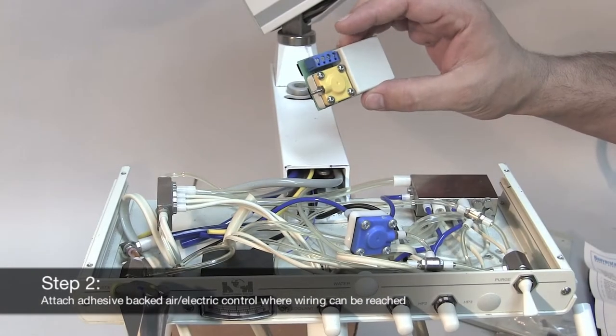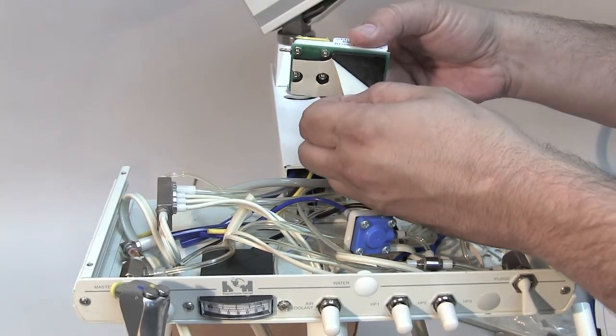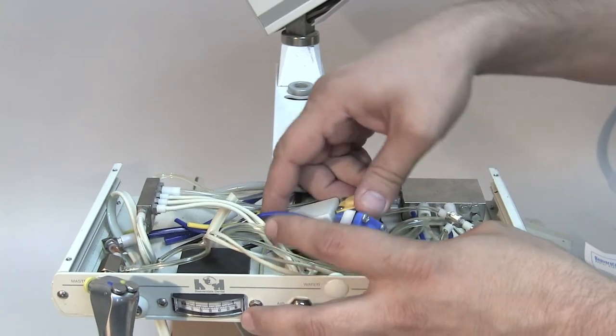Next, grab the air electric control and adhere it to the unit. Put it someplace where the terminals for the wiring and barb for the air signal tubing can easily be reached.